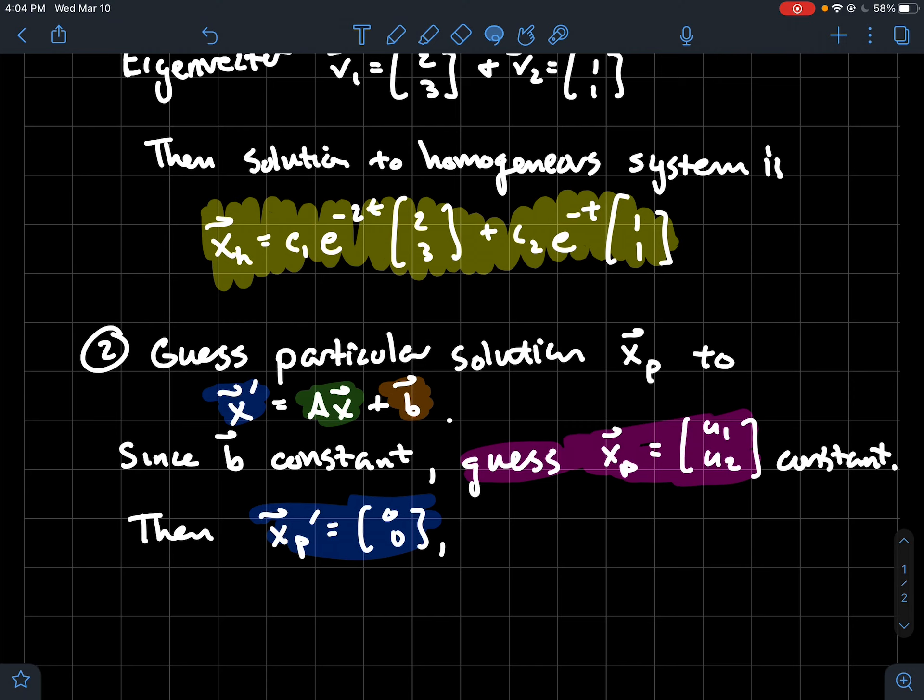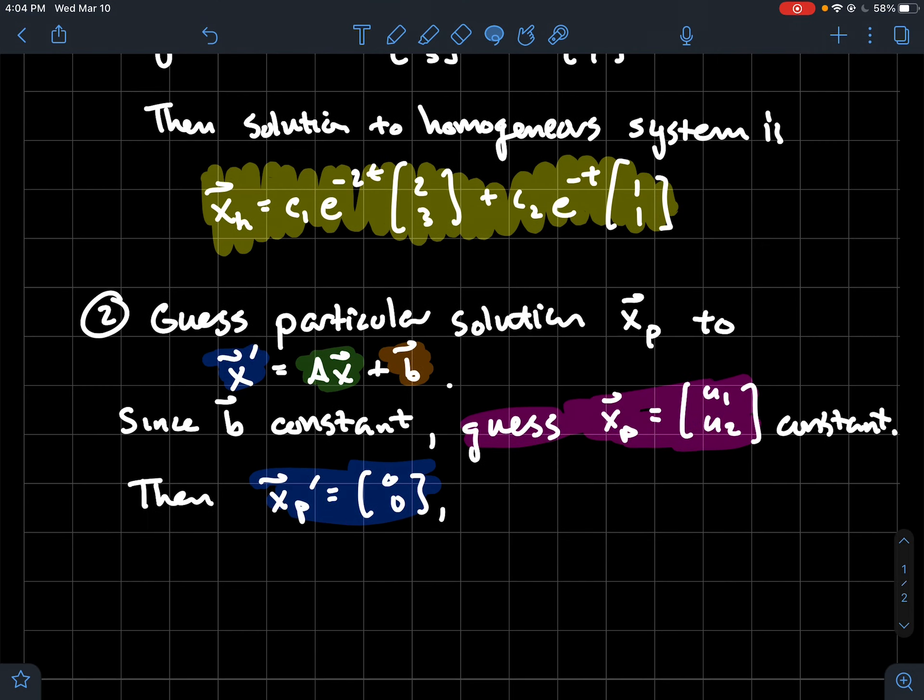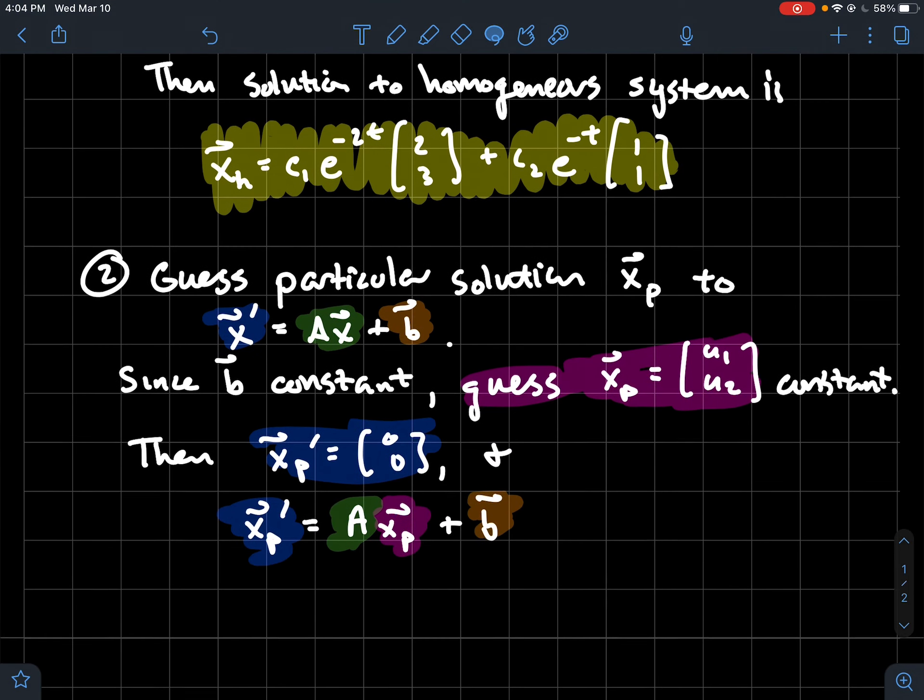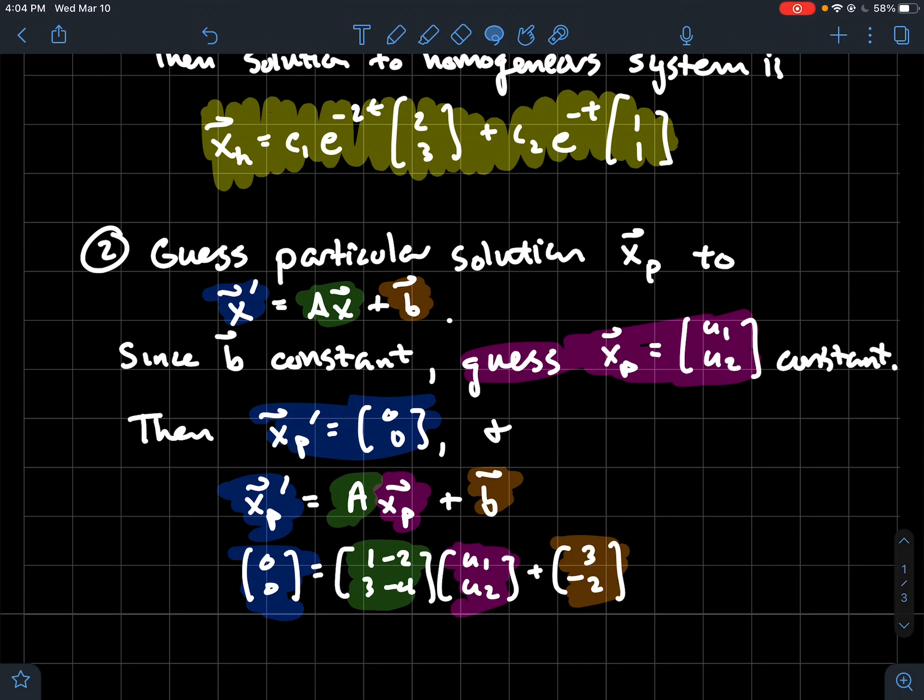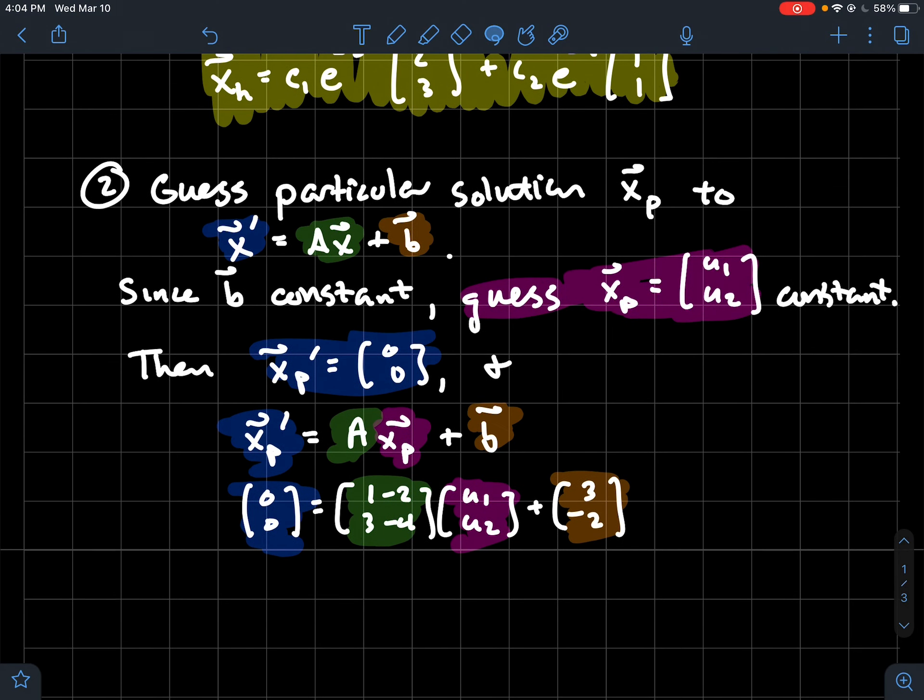Back to the color coding: when I plug in xp into my system here, on the left that's the zero vector zero zero. That's equal to my matrix times u1 u2 plus three negative two. What you've got there is you've got a vector equation that is secretly just a system of two equations in the variables u1 and u2.